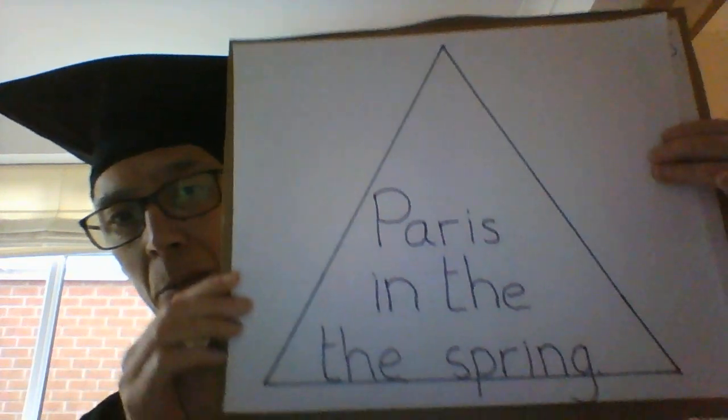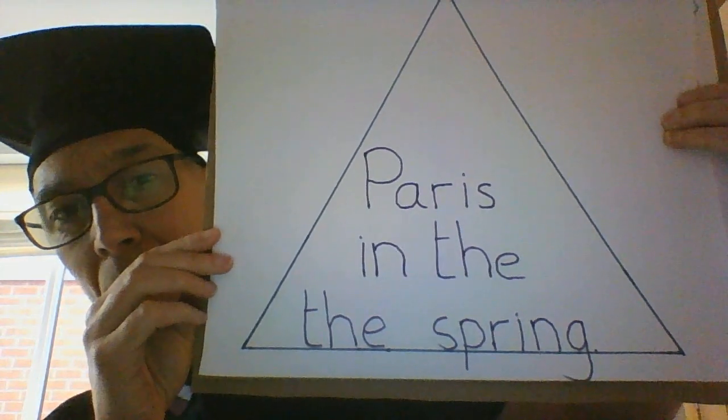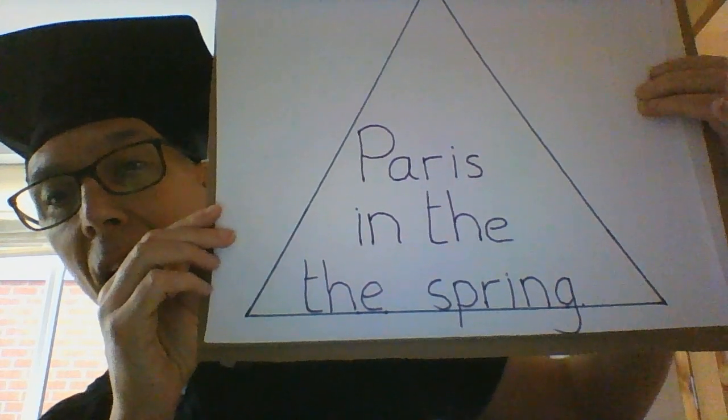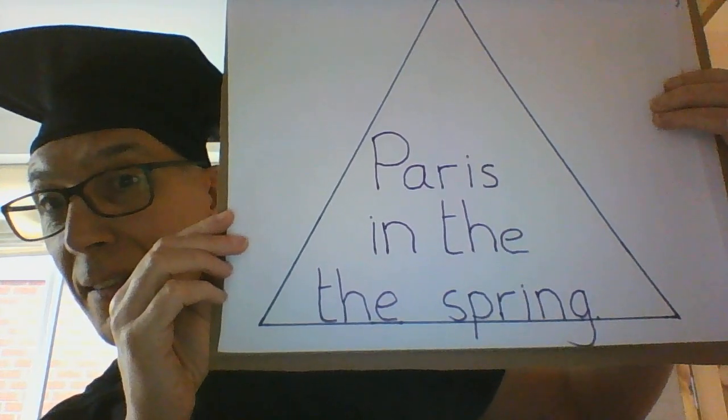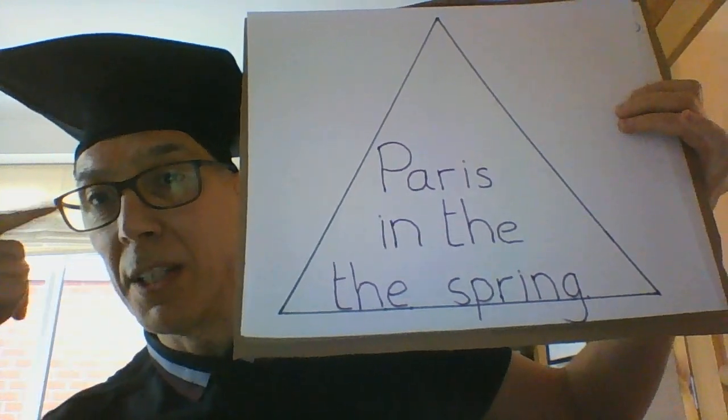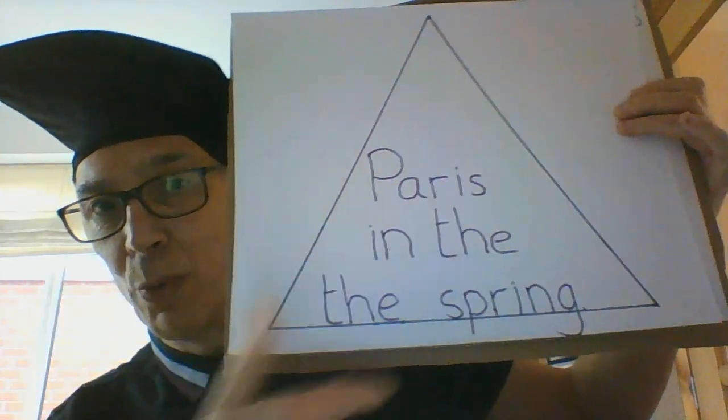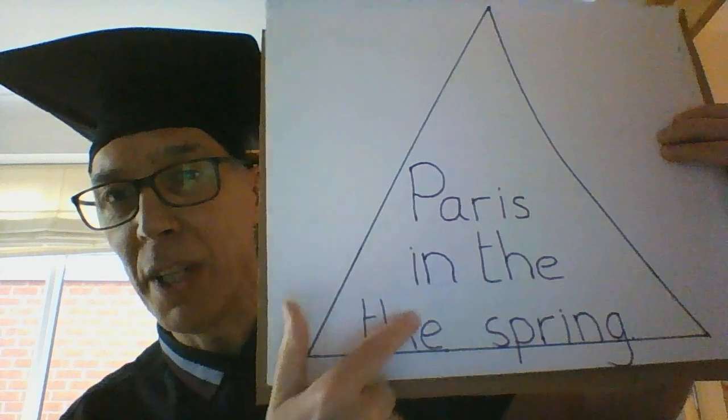Did you write down 'Paris in the spring'? Of course you did — and you've got it wrong. Look carefully: 'Paris in the the spring.' It's a trick — our eyes and brain read it and miss the duplicate word. They were setting trick questions because they don't want black people to pass or register to vote.